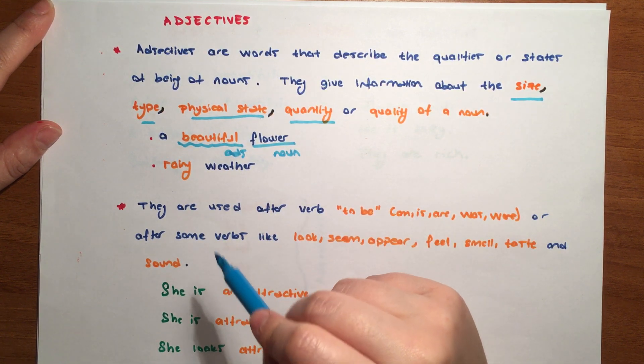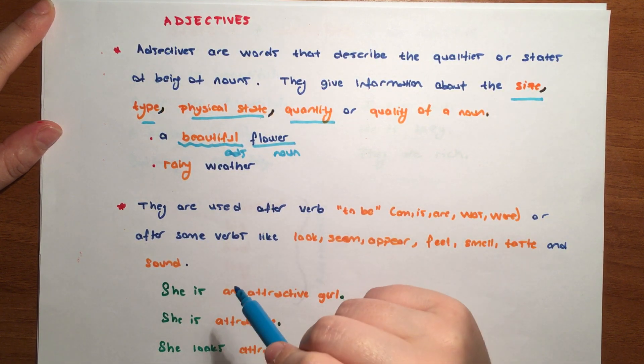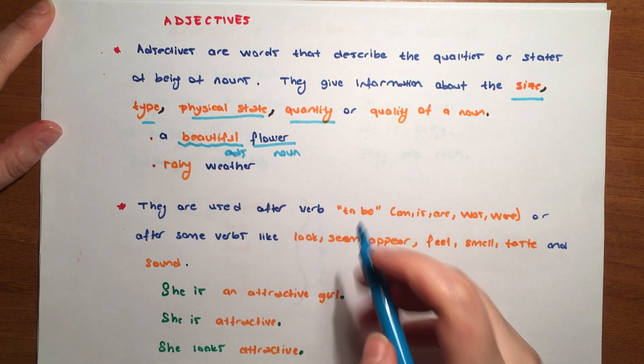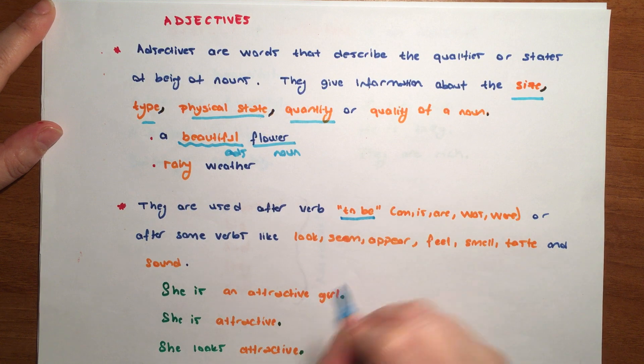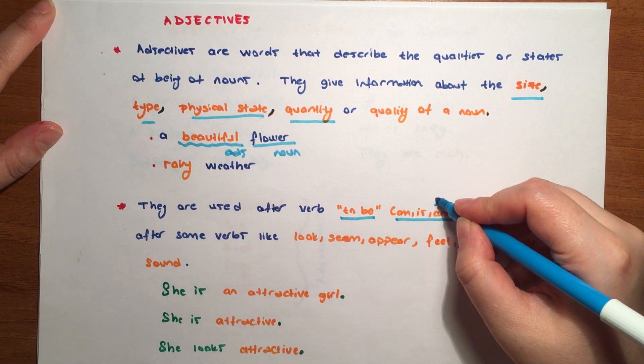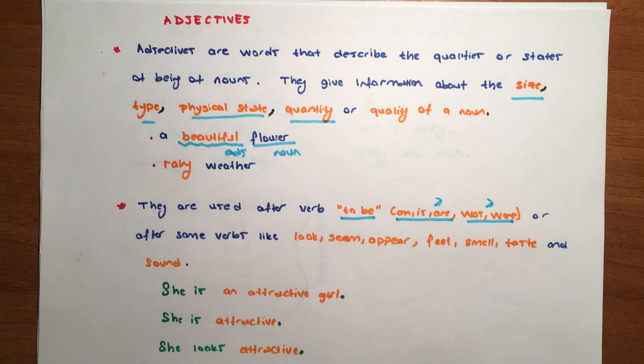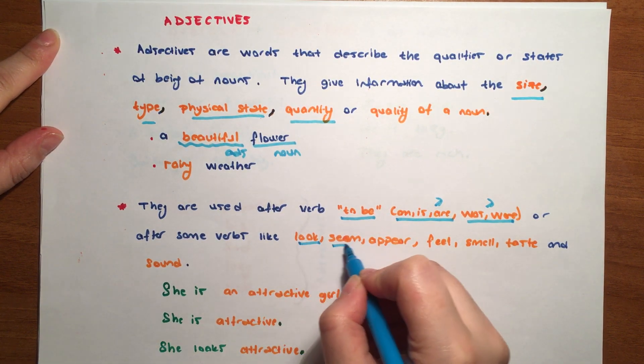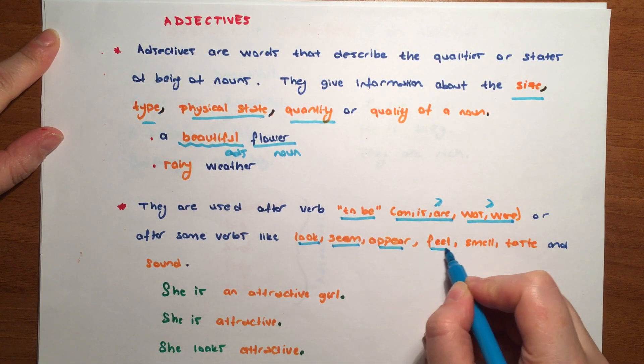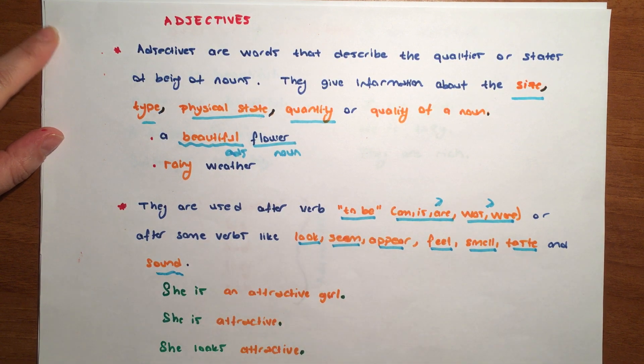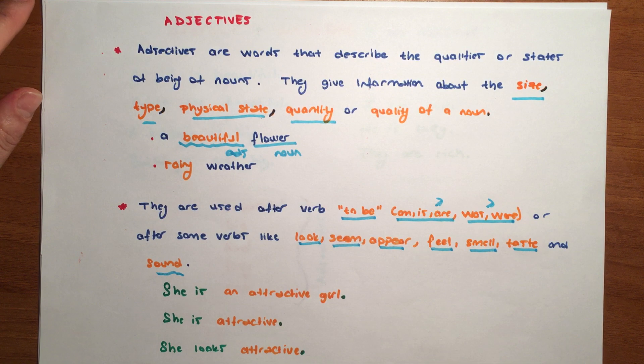And that is important - they are used after the verb to be. To be means am, is, are, or was in the past. Is is the present form, was is the past form. Or after some words like look, seem, appear, feel, smell, taste, and sound, just after these verbs and to be.